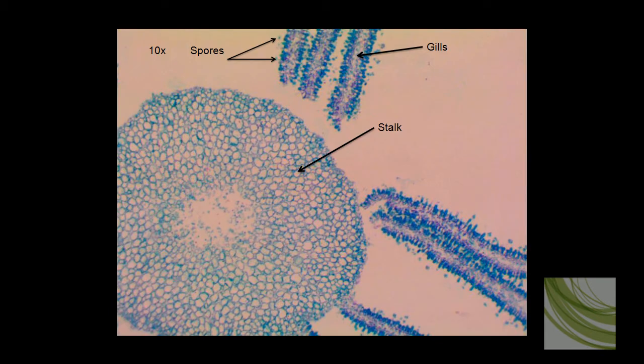Here is that same slide which I have been able to enhance with the computer a little bit so we can get a closer look at the stalk. We can see the gills here and we can see a lot of spores. I have labeled a couple spores here of this Coprinus.